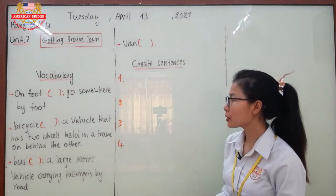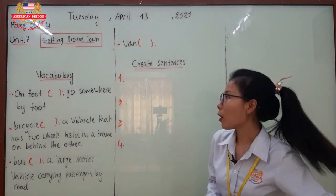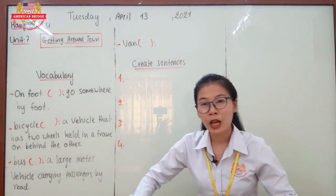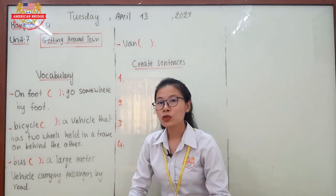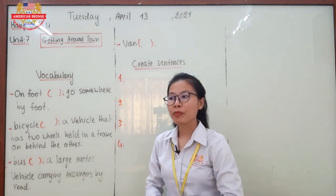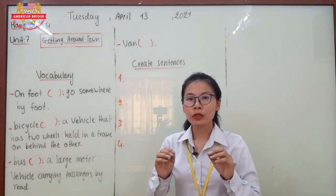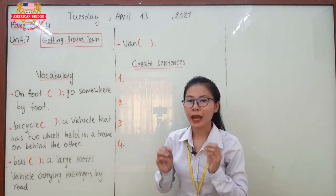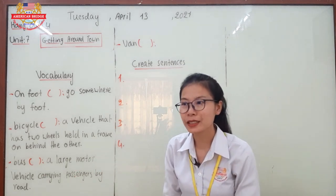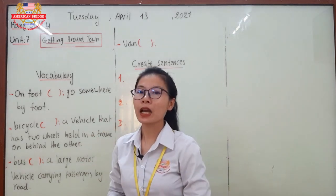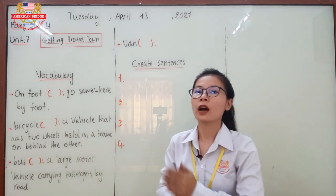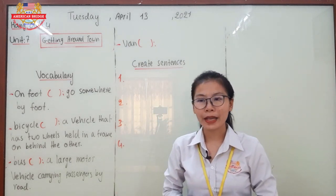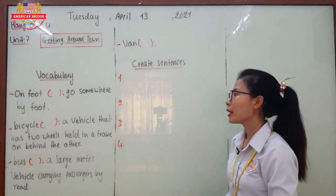Now let's move to another four vocabulary words. The first word is 'on foot.' On foot means to go somewhere by foot — you use your two legs to walk somewhere. For example, if you want to go somewhere and you don't have a vehicle, you use your legs. We can say: 'I go to work on foot' or 'I go to school on foot.'